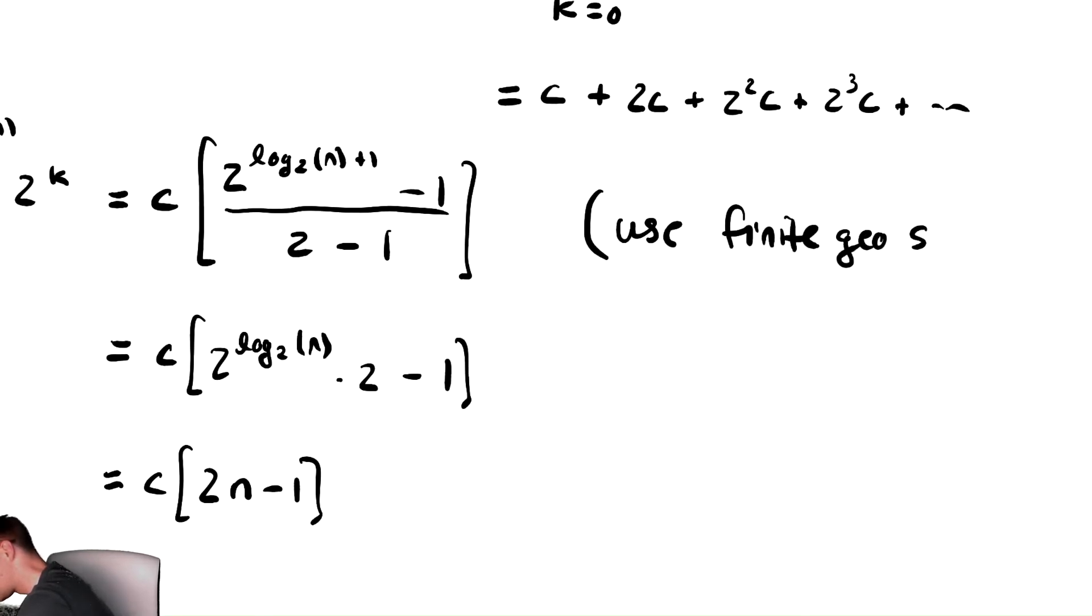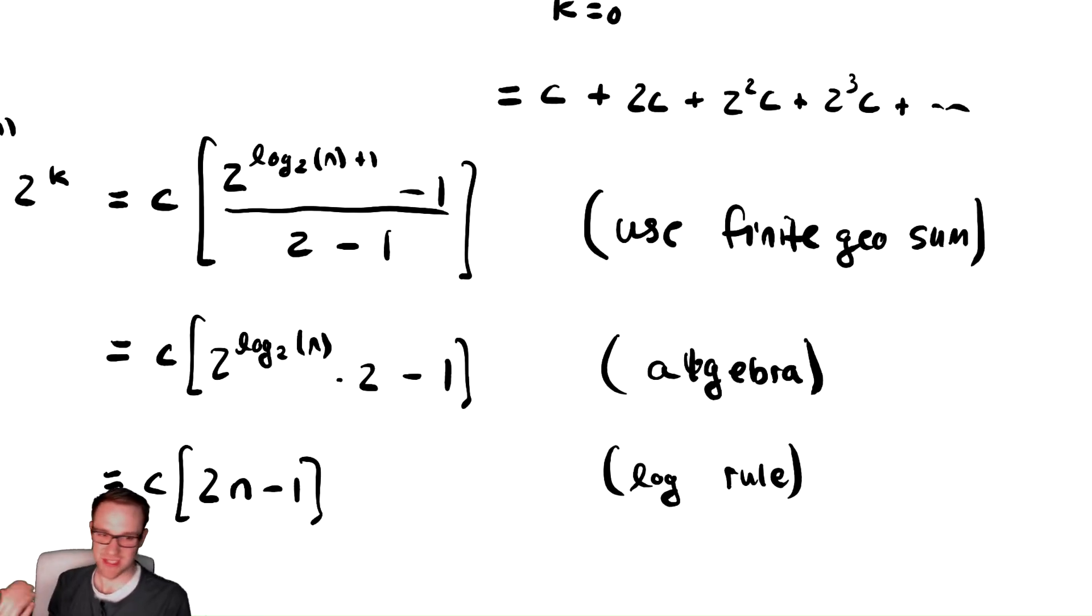And then we use algebra, and then log rule. Really it's not a log rule, it's the definition of a log, it is the inverse function of exponentiation, but it's good enough for us. So we have computed the running time as an exact quantity, c times 2 n minus 1, so all we need to do now is tell what the complexity is.